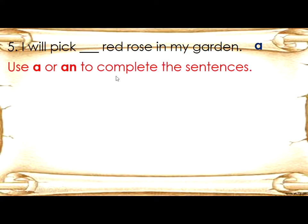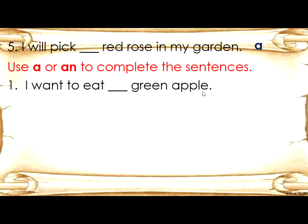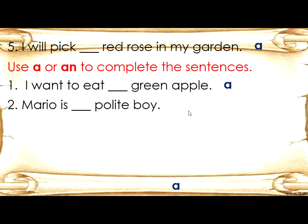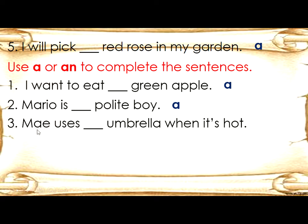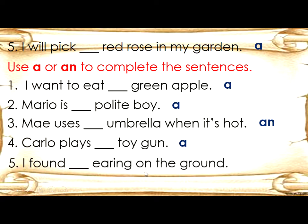Use A or AN to complete the sentences. Number one: I want to eat blank green apple — write A. Number two: Mario is blank polite boy — write A. Number three: May uses blank umbrella when it's raining — write AN. Number four: Carlo plays blank toy — write A. Number five: I found blank earring on the ground — write AN.